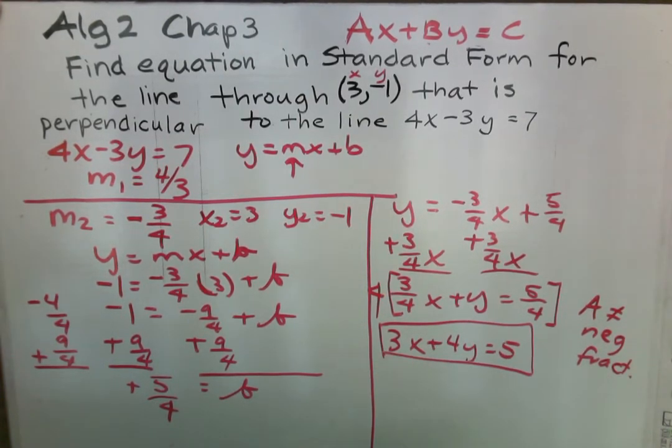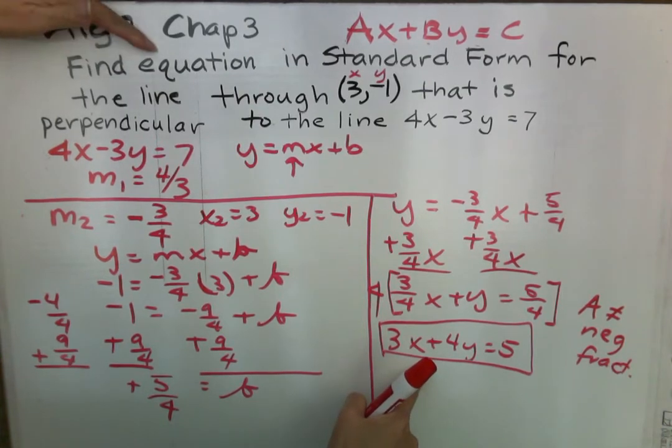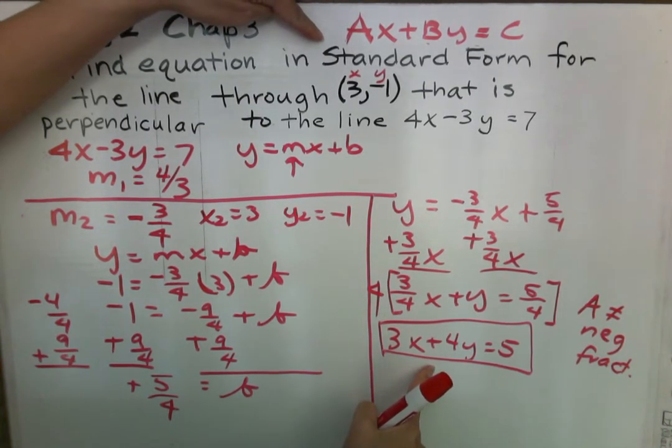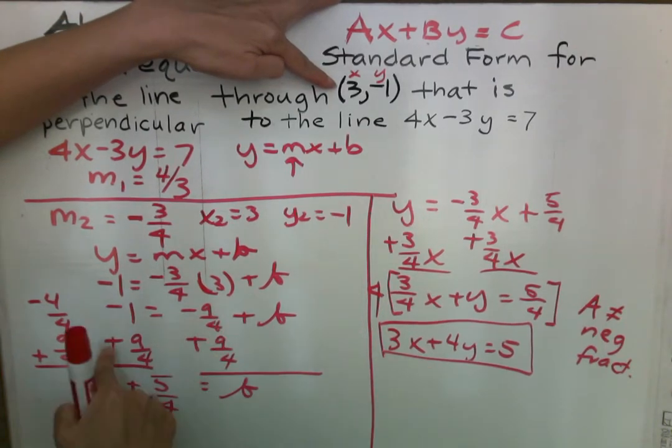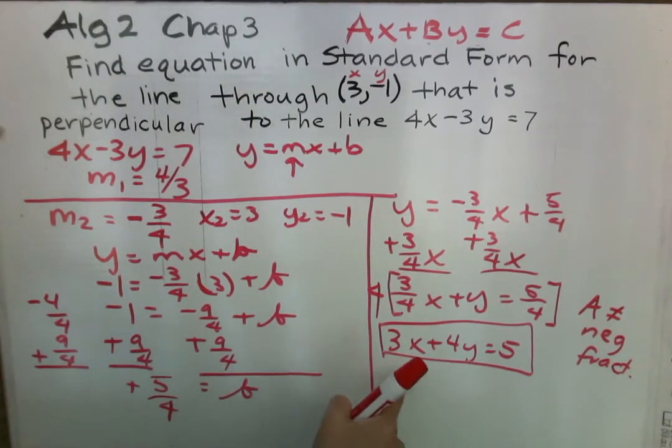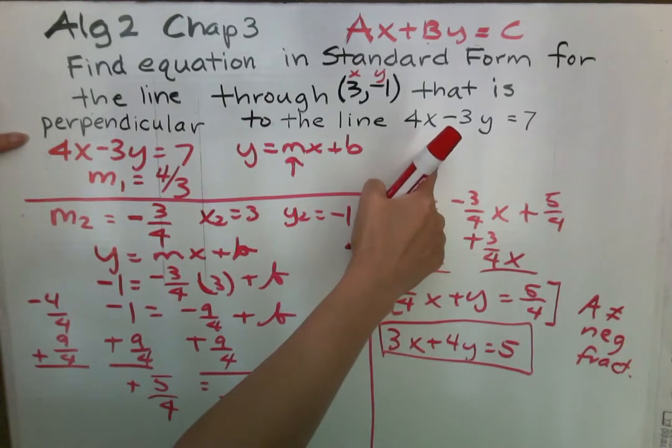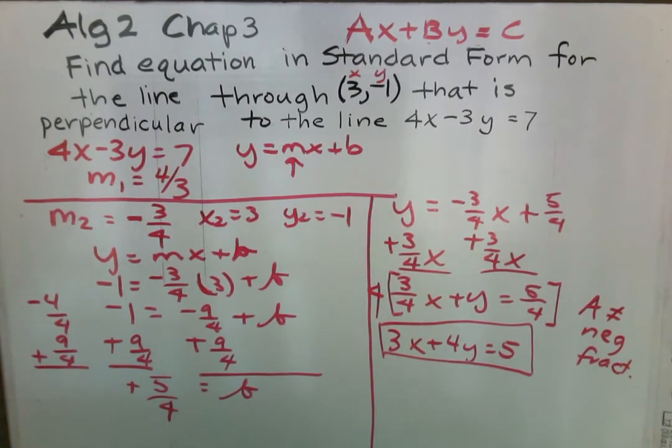And that is your equation that is in standard form that passes through these points, (3, negative 1), because we plugged it into the equation. Now it is perpendicular to this line.